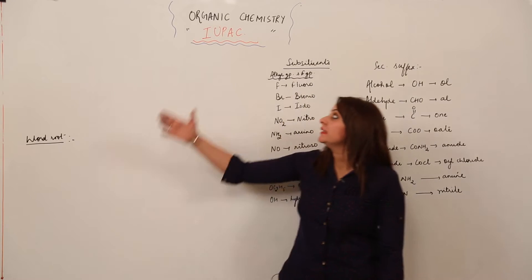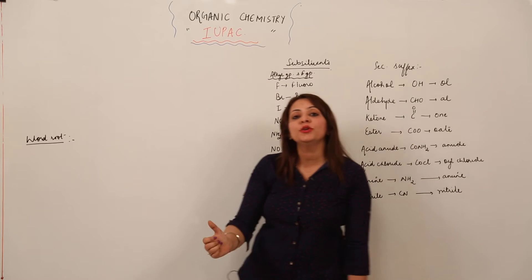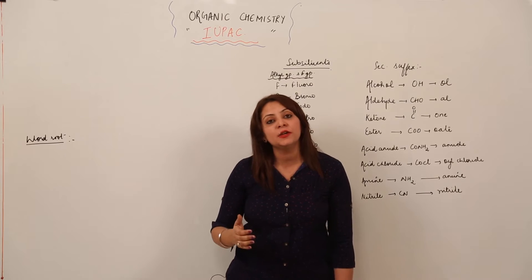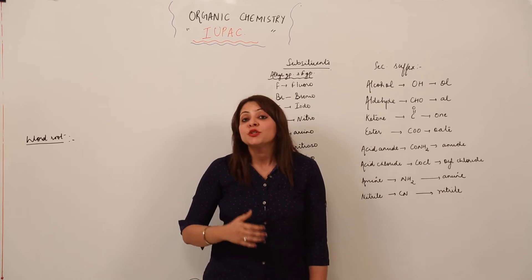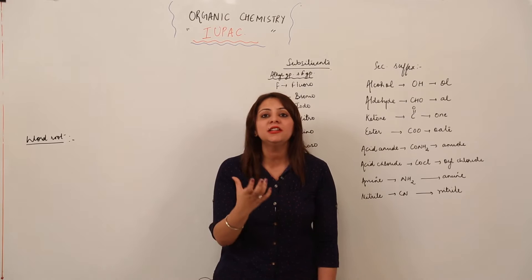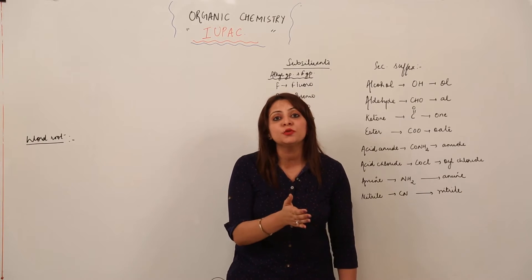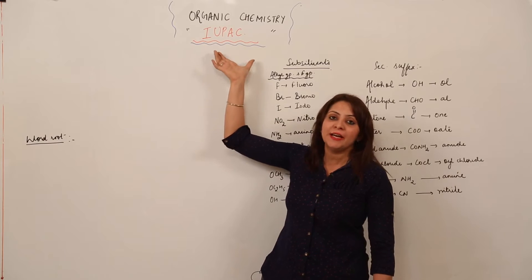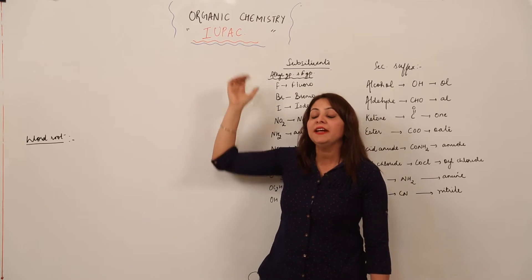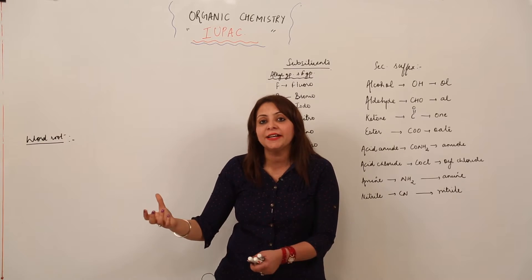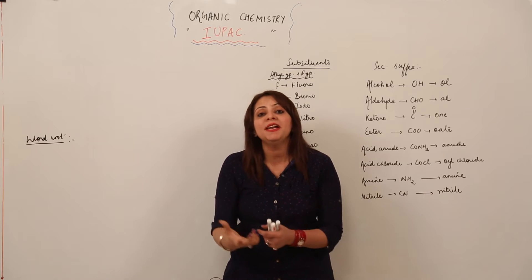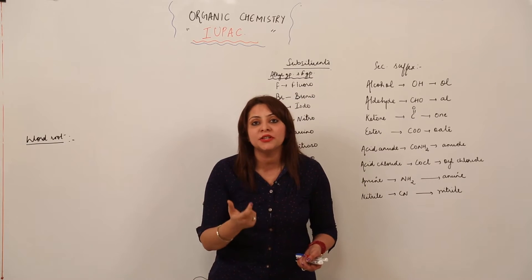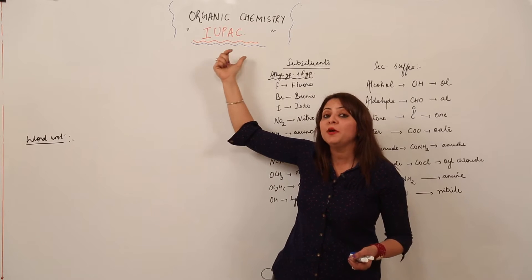Today we are going to start with the topic of IUPAC. First, you should know what IUPAC actually is and where it came from. Many elements are already discovered and many discoveries are still in the pipeline, so we need an organization which specifies a name for an element that can be accepted worldwide. Before IUPAC was launched, elements discovered by Germans were named accordingly, and elements discovered in America were named accordingly, but we needed a universally accepted name.